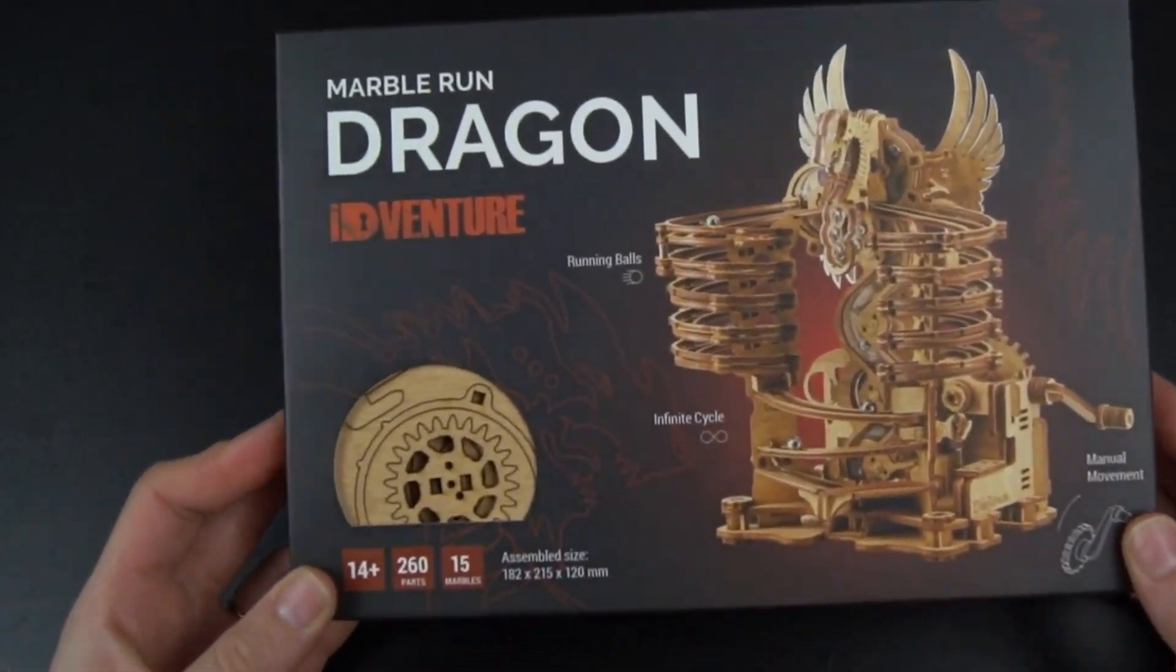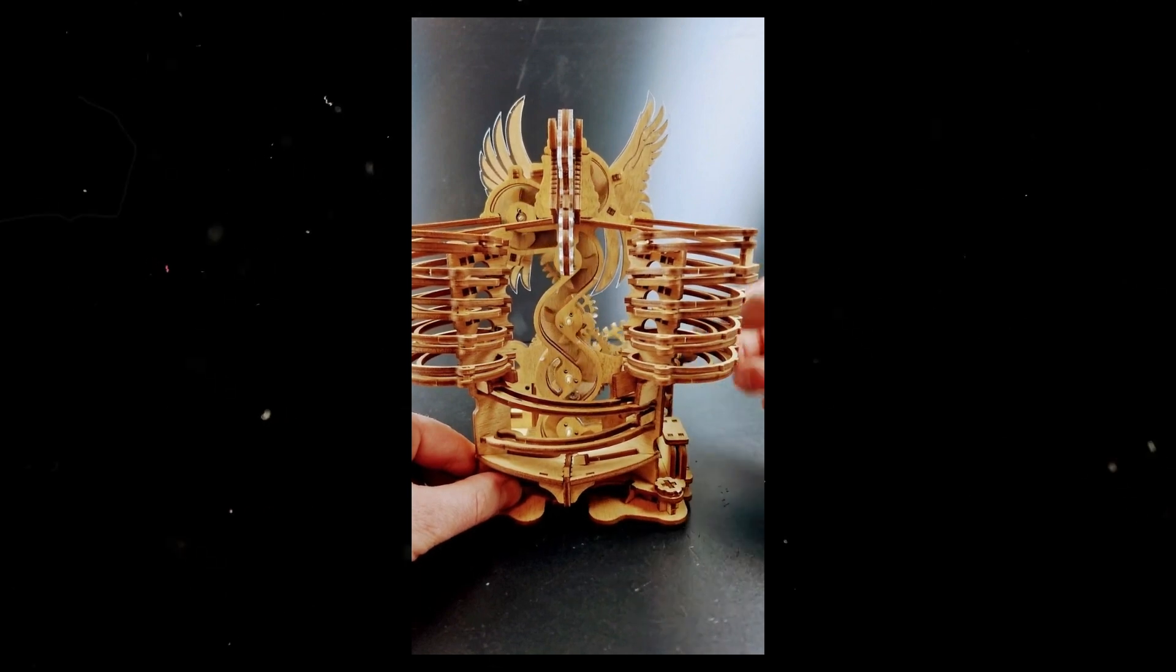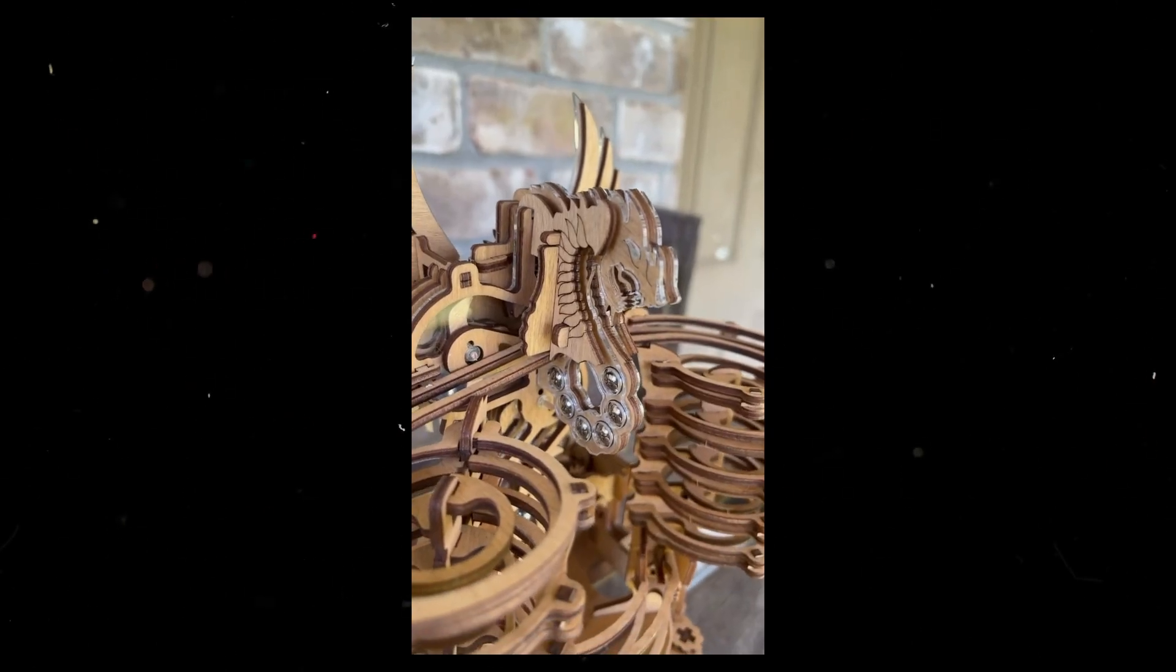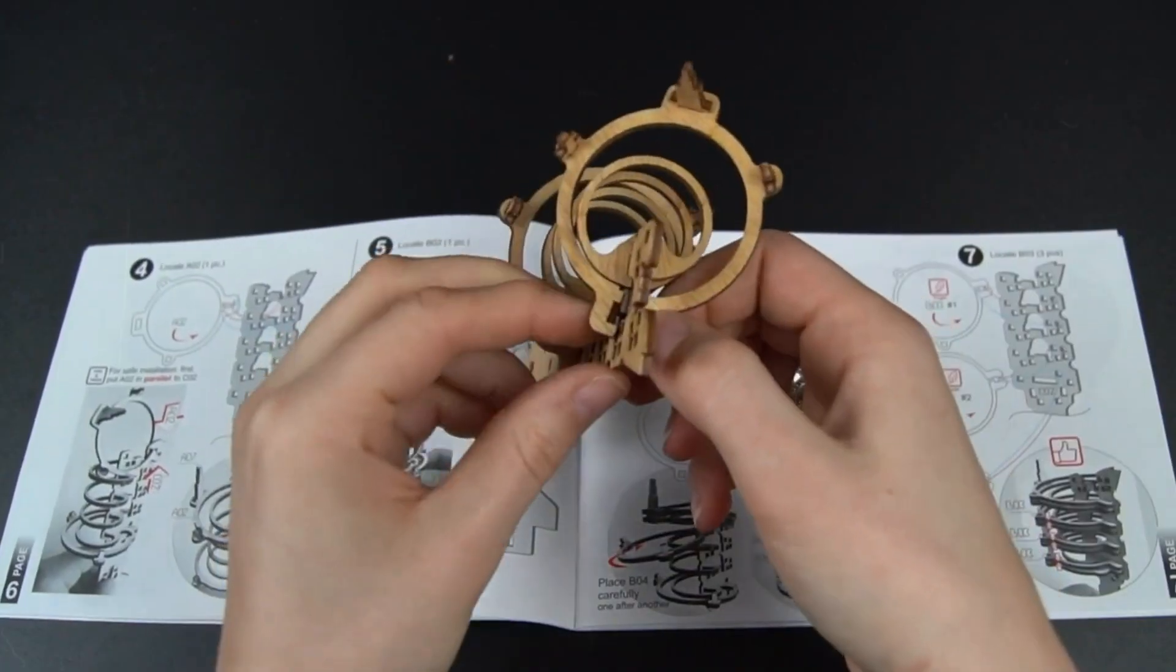The DaVenture Marble Run Dragon is a wooden marble run that is shaped like a dragon. It is incredibly intricate and complex, with over 260 pieces. The run is made up of a variety of different pieces,